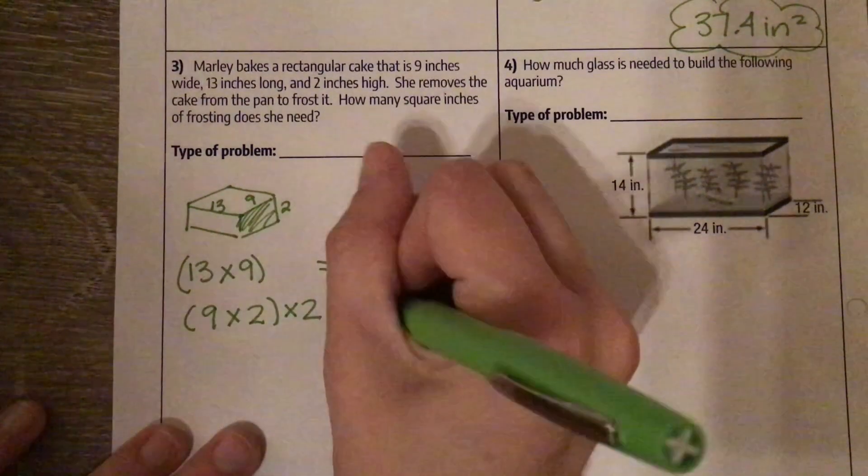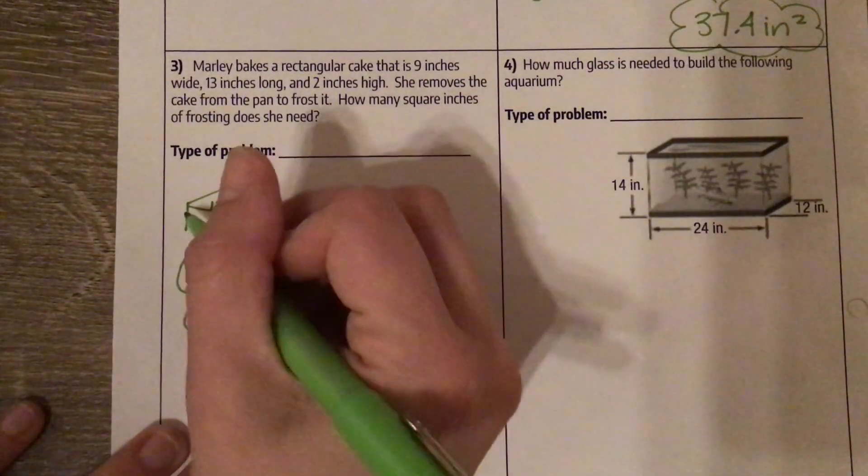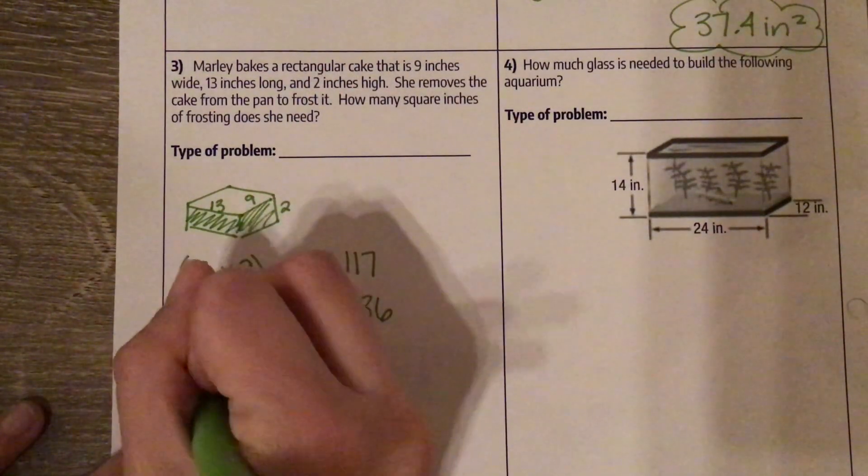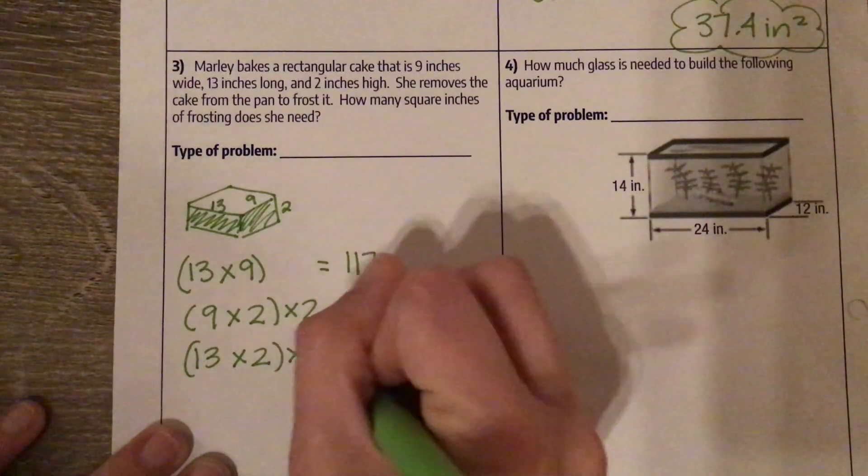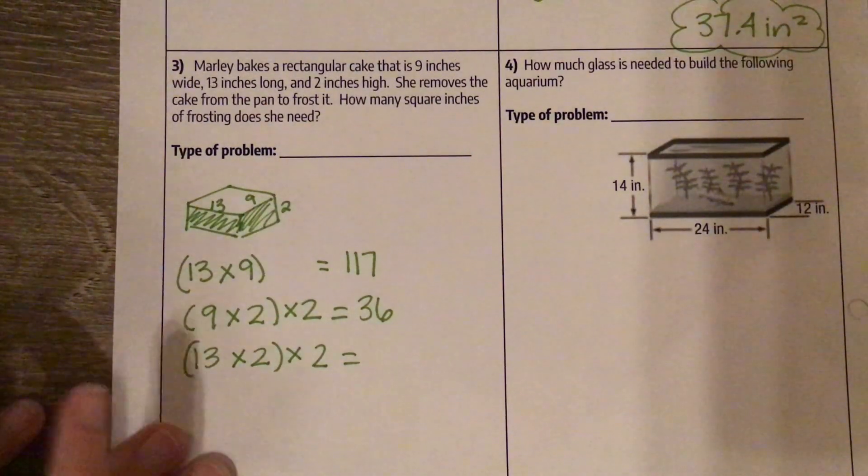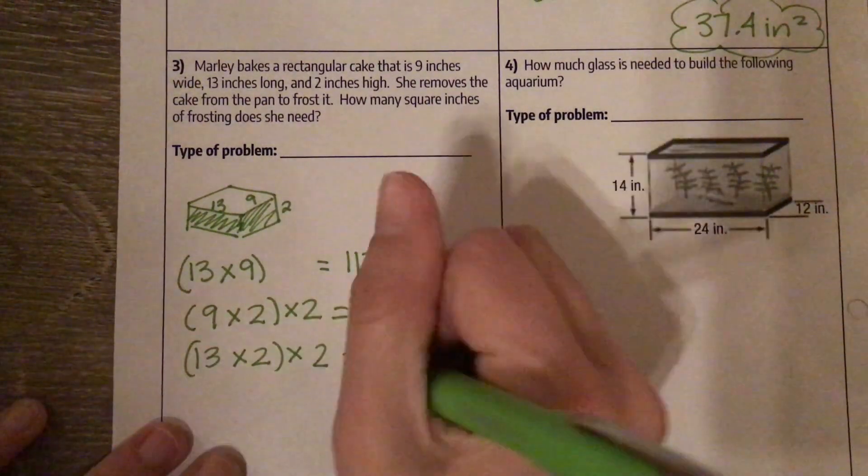Which gives us 36. And then we have this side right here, which is 13 by 2. But there's two of them, so we multiply that by 2. Which gives us 52.